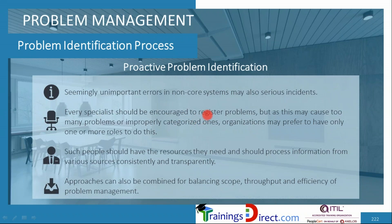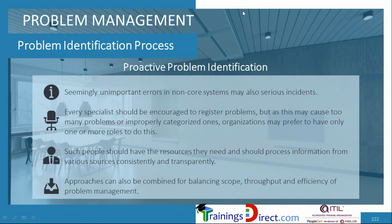Every specialist should be encouraged to register problems, but since this may cause too many or improperly categorized entries, some organizations prefer to have only designated people do this — only those which are relevant and well-defined should be managed under proactive problem identification. People involved in proactive problem identification should have the necessary resources, such as tools to analyze logs and run health checks, and access to information like architectural diagrams. Various approaches can be combined — for example, looking at results from audits, risk logs, and health logs rather than sticking to one path.